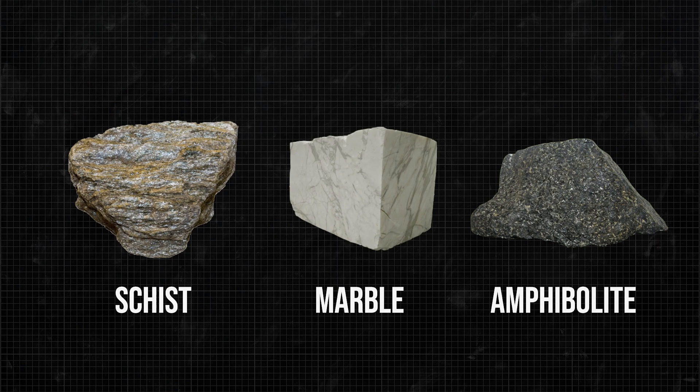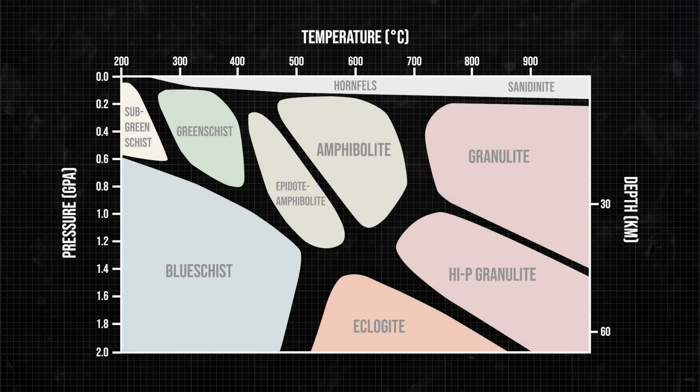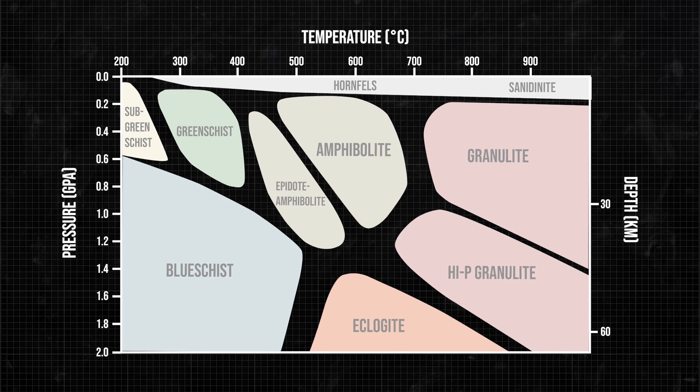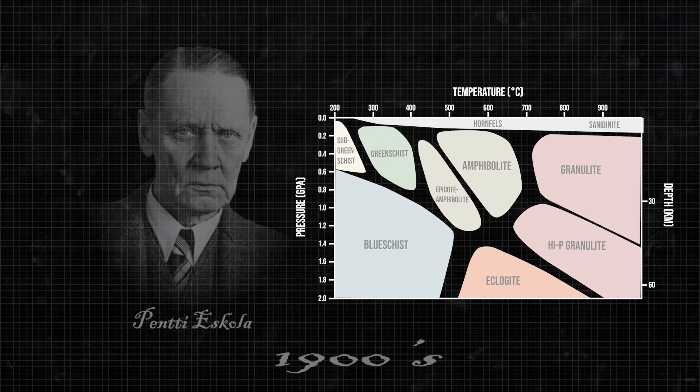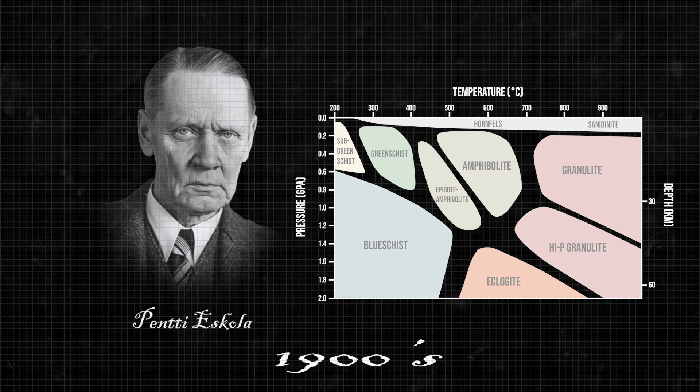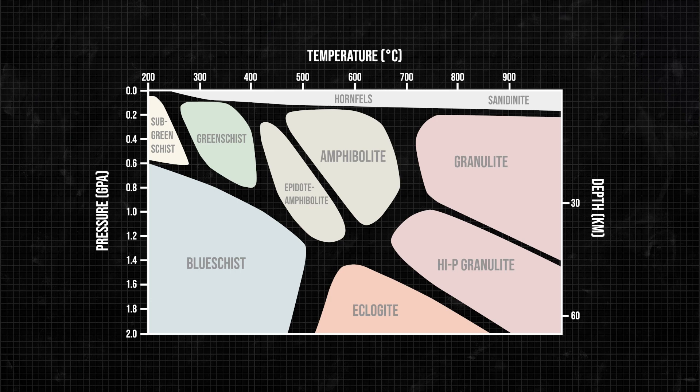So, one way to simplify the complexity of metamorphic rocks and relate these to plate tectonics is to use metamorphic facies, the concept that Eskola proposed a century ago. Metamorphic facies are places in the pressure-temperature space, just like the diagram shows.